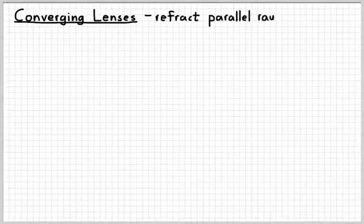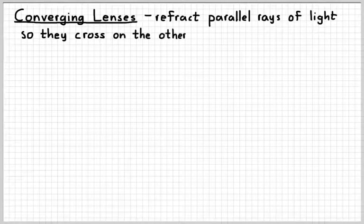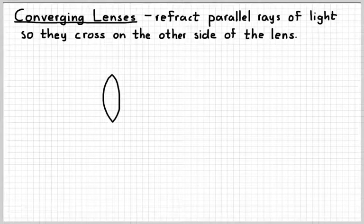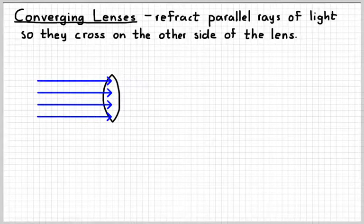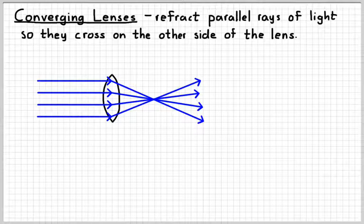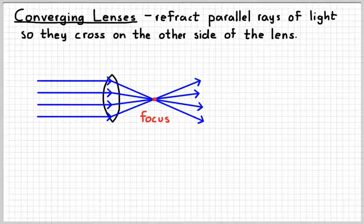So a converging lens basically works by refracting parallel rays of light. So rays of light that are parallel, they'll refract so that they cross each other on the other side of the lens. And so a picture may look like this. Converging lenses are typically wider in the middle. There are some parallel rays of light. And then when they go through the lens, they all converge on that point in front of it. And we might call that point the focus, kind of like we had for concave mirrors.